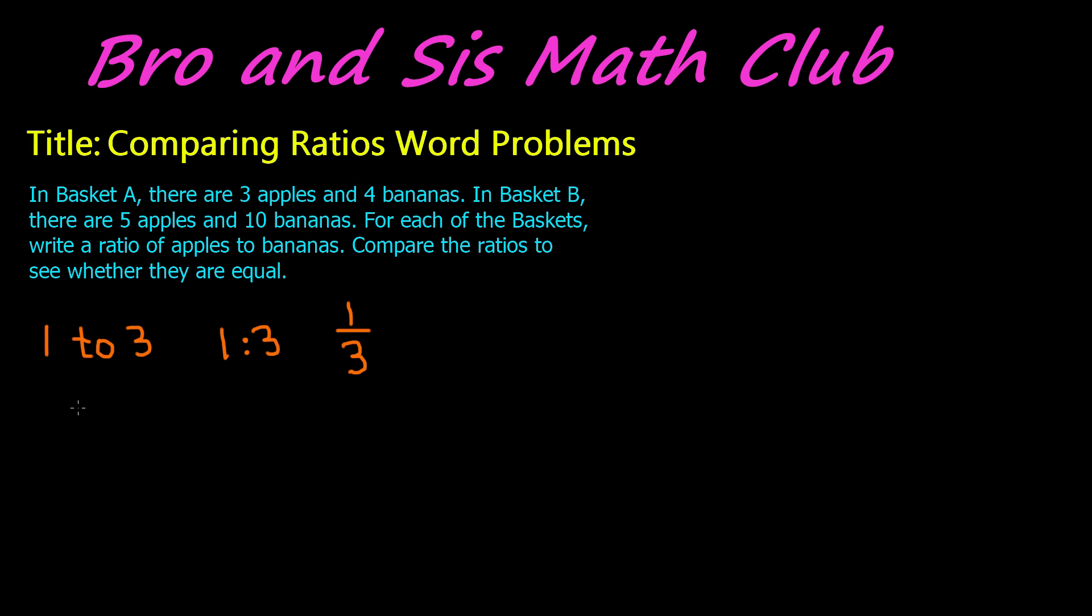Let's go ahead and read our word problem. In basket A there are three apples and four bananas. In basket B there are five apples and ten bananas. For each of the baskets, write a ratio of apples to bananas. Compare the ratios to see whether they are equal.